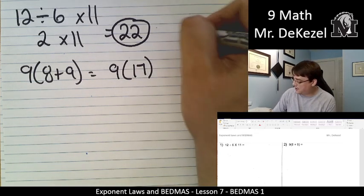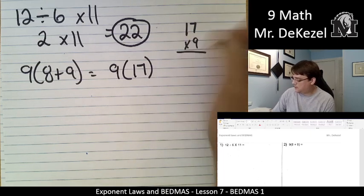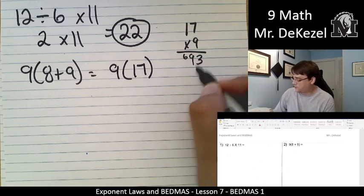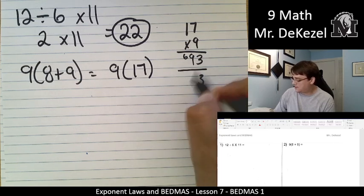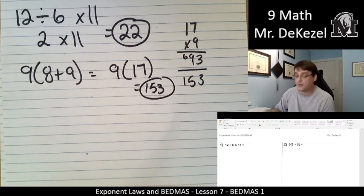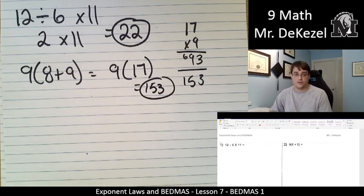Let's go ahead and do it how we always do. 9 times 7 is 63, a little 6 to add. 9 times 1 is 9, 6 plus 9 is 15. That's 153 for our answer for this one.